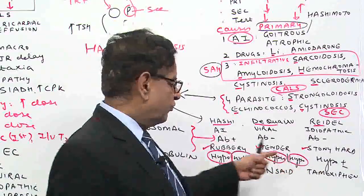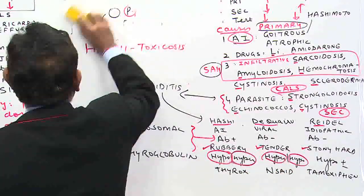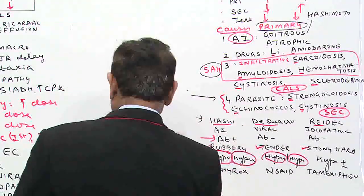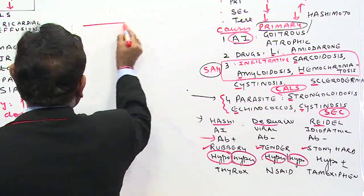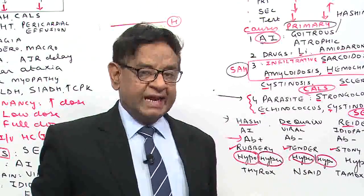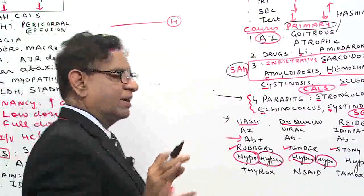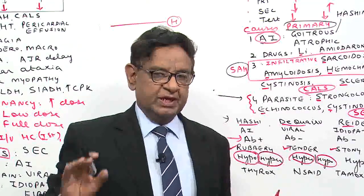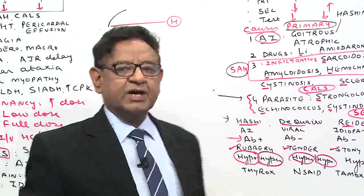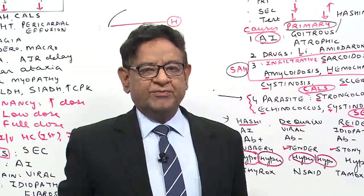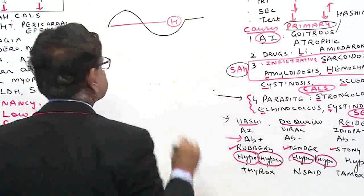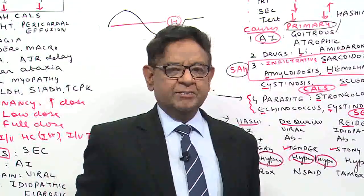Let me explain why De Quervain's starts as hyperthyroid. When viral fever involves the gland, initially whatever hormone is stored in the gland is released — all preformed hormones are released and the patient transiently becomes hyperthyroid. Later, all preformed hormones are consumed, so the patient becomes hypothyroid. After the viral fever has disappeared, the patient returns to normal.